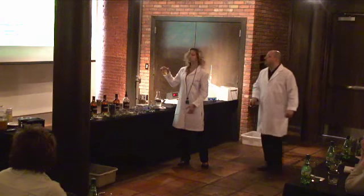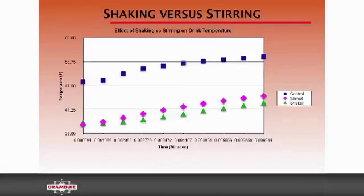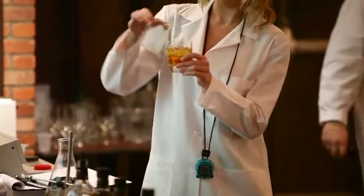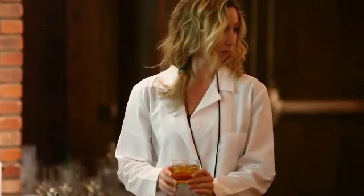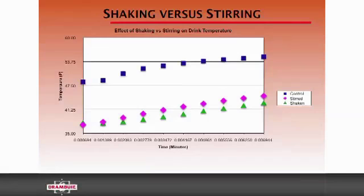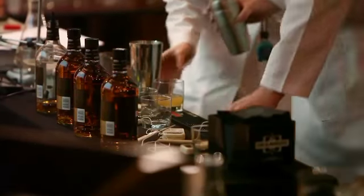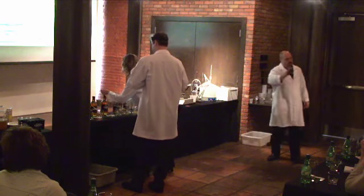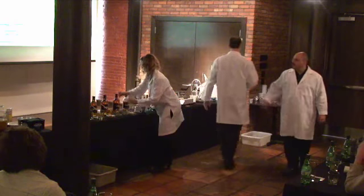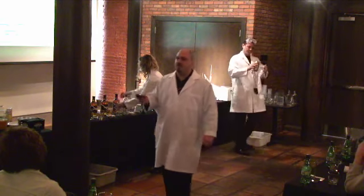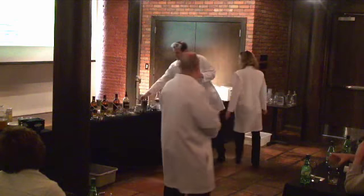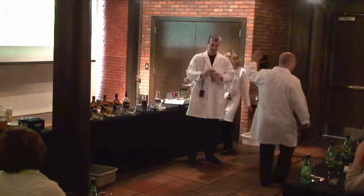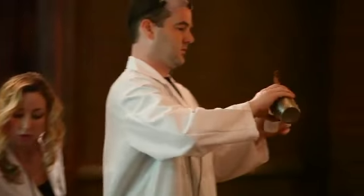Here's what we're getting — shaking versus stirring. The top line is the control: a drink sitting on ice for 60 seconds. You can see the drink goes down to about 48 degrees. Shaking and stirring actually take the drink down to almost the exact same temperature, as the hypothesis suggested — about 37.5 degrees. Now look what happens after: the green line is shaken and the pink line is stirred. The delta at any given time between shaking and stirring — meaning the change in temperature — is about 2 degrees.